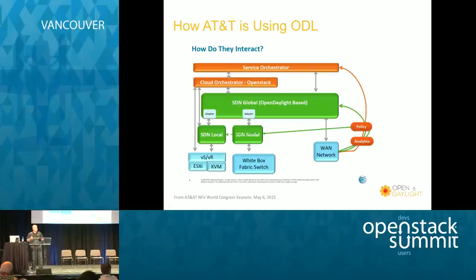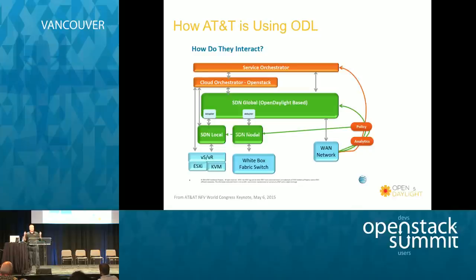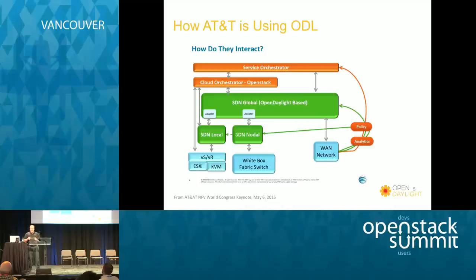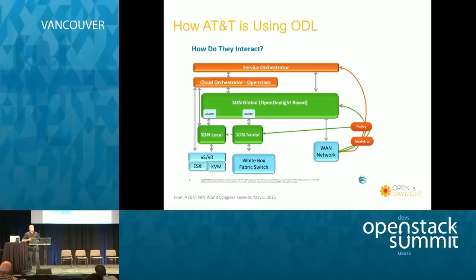AT&T is trying to create an environment where what used to be delivered as hardware appliances inside their data centers is actually virtualized. They want to leverage what virtualization and cloud technology has done for typical enterprises. They want to be able to take their network functions — things like WAN optimization, intrusion detection, firewalls, load balancers, parental control systems — and put those out in a virtualized environment, have VMs spun up to execute those functions, steer traffic through those different functions as needed, and flex up or down to procure new customers.